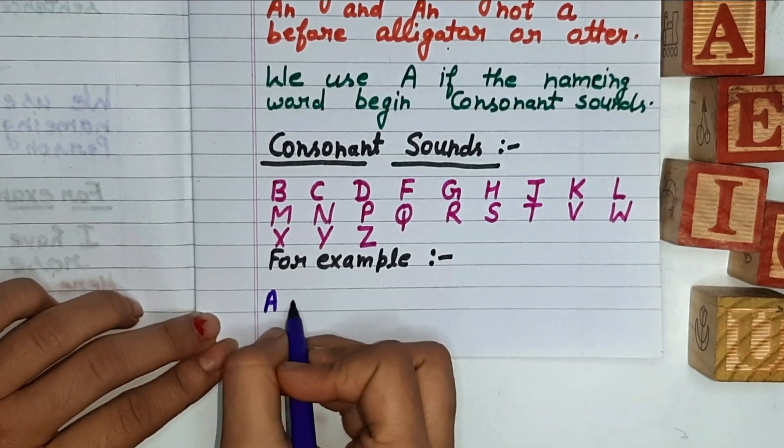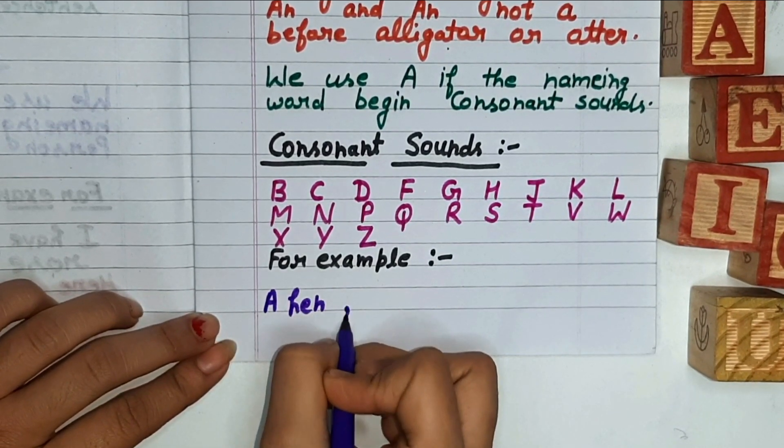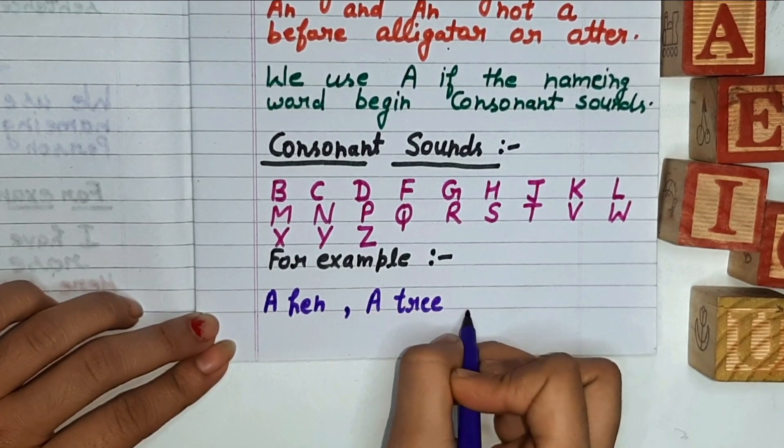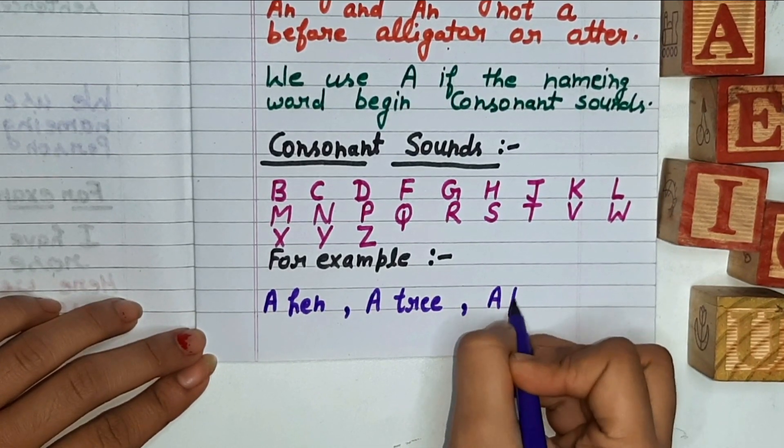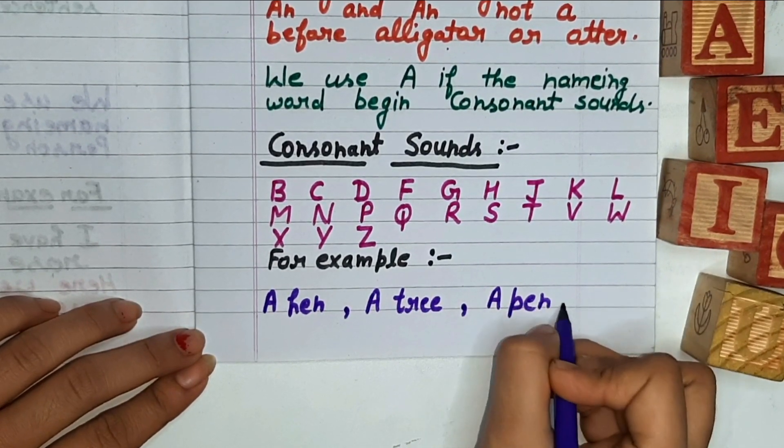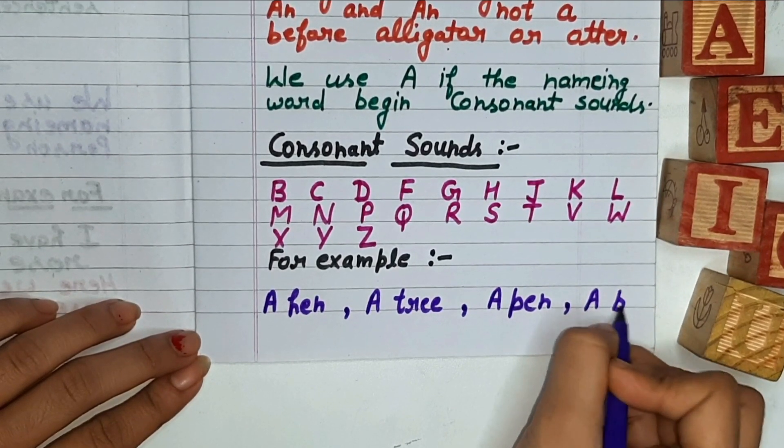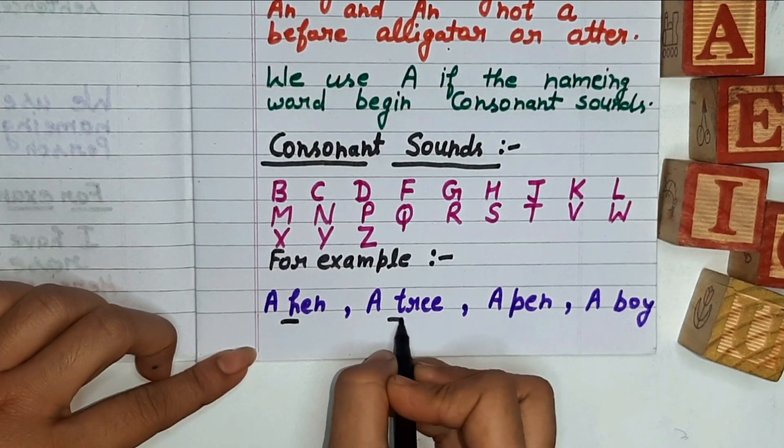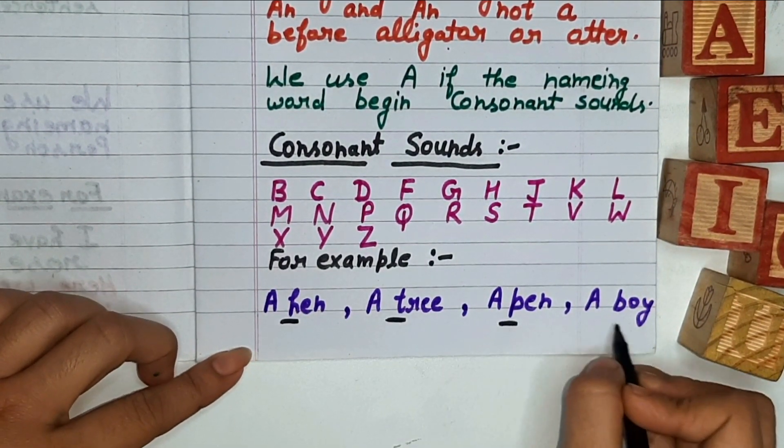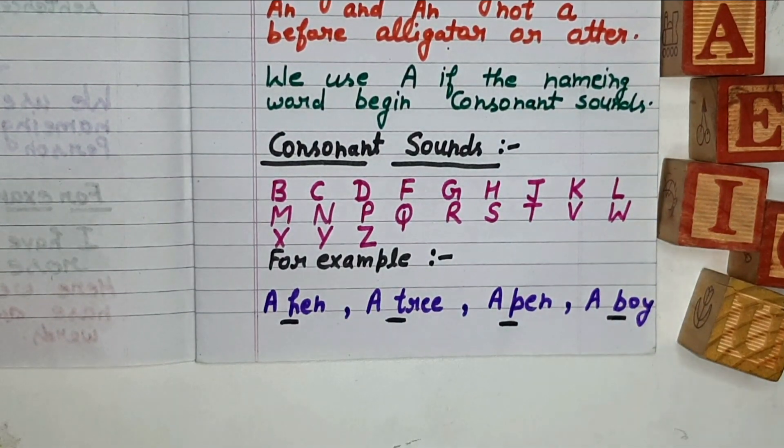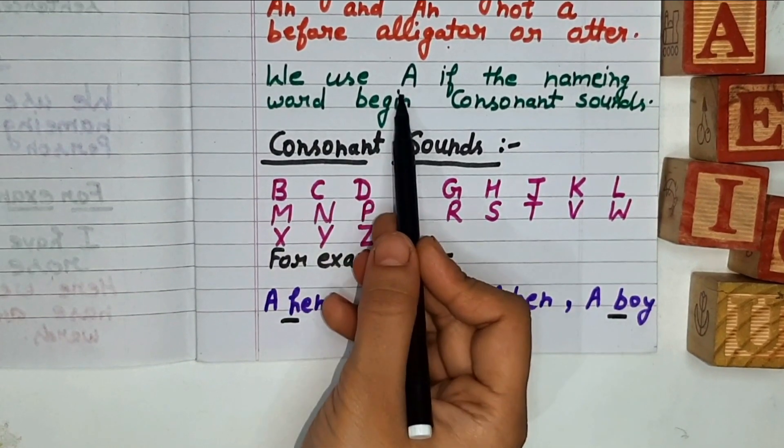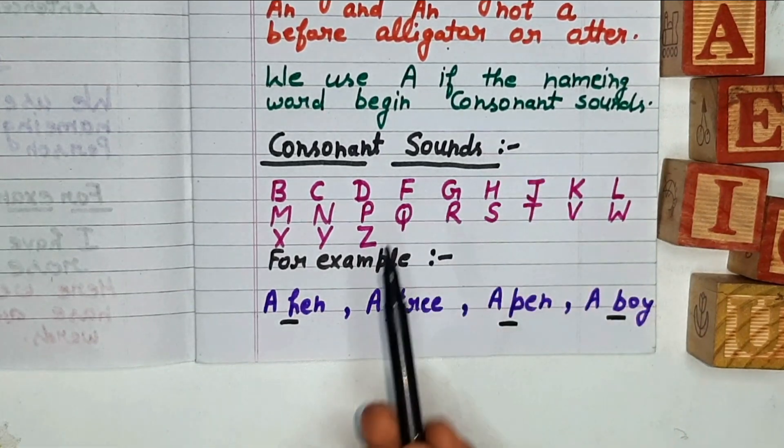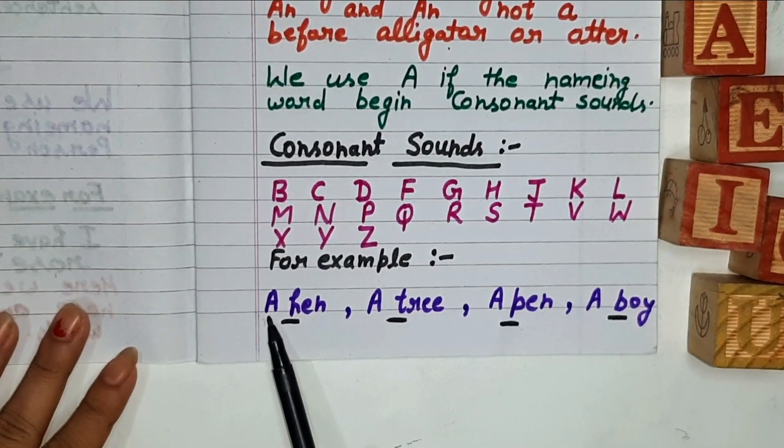A hand, a tree, a pan, a boy. We use A if the naming word begins with consonant sound. For example, a hand, a tree.